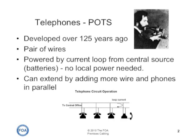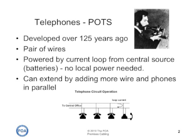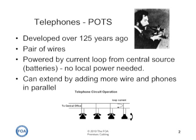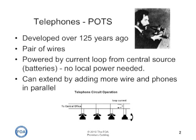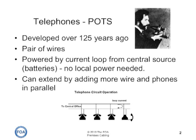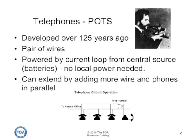The first applications for premises cabling were for telephones, and what we normally call POTS, or plain old telephone service, a system basically developed by Alexander Graham Bell over 125 years ago. It uses a pair of wires and is powered by a current loop from a central source, so no local power at the telephone itself is needed. The nice thing about POTS service is you can extend the system as far as you want, up to the limits of the losses on the cable, by simply adding more wire and phones in parallel.